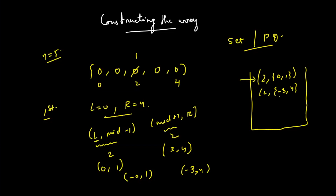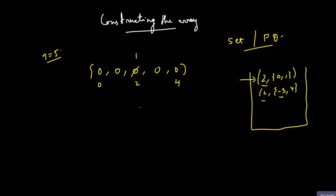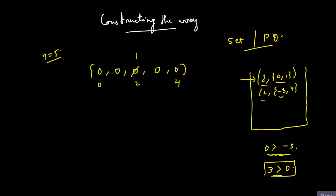You can understand why we insert minus L: the problem states that if there are subarrays of the same size, we take the first one from the left. By inserting minus L, the element with the smaller L becomes larger after negation, so it rises to the top of the priority queue — no external comparator needed. This is a trick to convert a max priority queue into a min priority queue for the second key without writing extra comparator syntax.